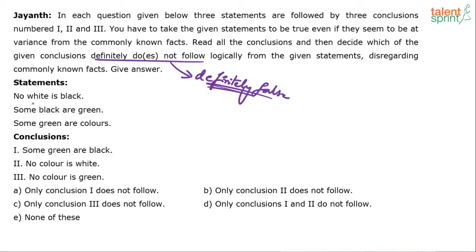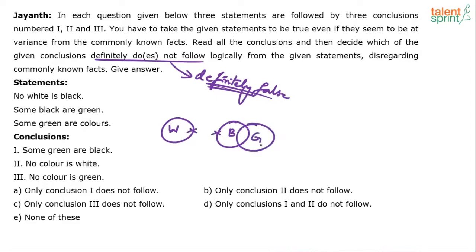Here's the solution. Statements: no white is black — so white and black cannot touch each other. Some black are green. Some green are colors. So the three statements are: no white is black, some black are green, some green are colors.